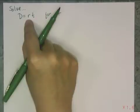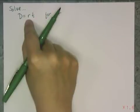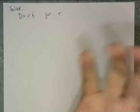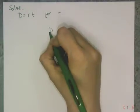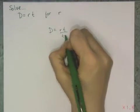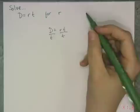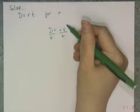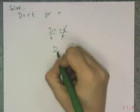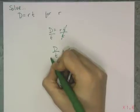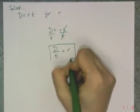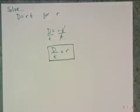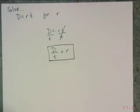I think about what's been done to r — it's been multiplied by t. To get rid of that, I divide both sides by t using the division property of equality. That means the t's cancel, and I'm left with d over t equals r. I have just transformed that formula to r equals d over t, which is a formula for rate in terms of distance and time.